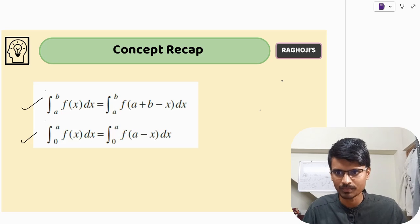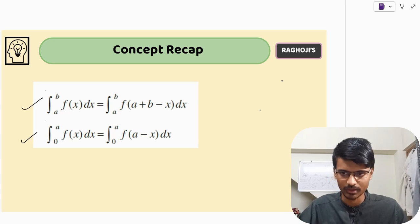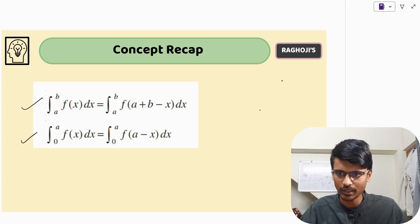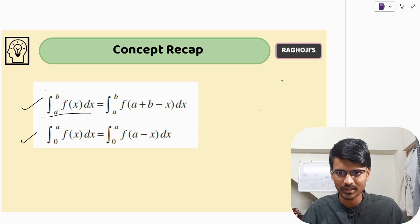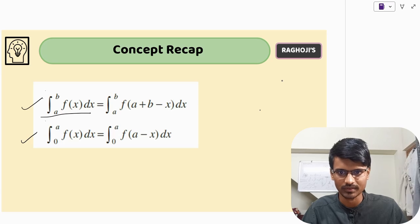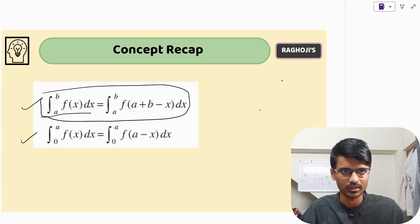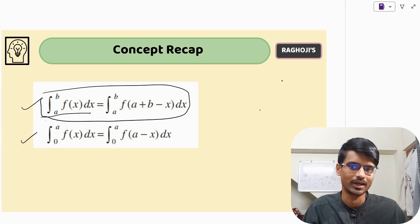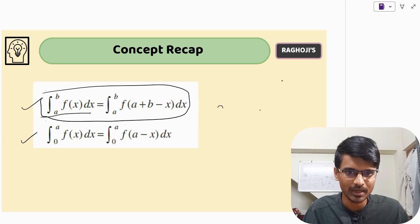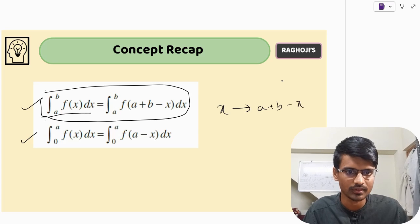This is a very simple property. The integral from A to B of f(x) dx is equal to the integral from A to B of f(A + B − x) dx. What the property says is: in place of x, you replace it with A + B minus x — that's it.